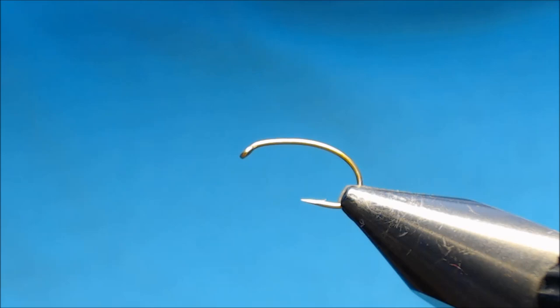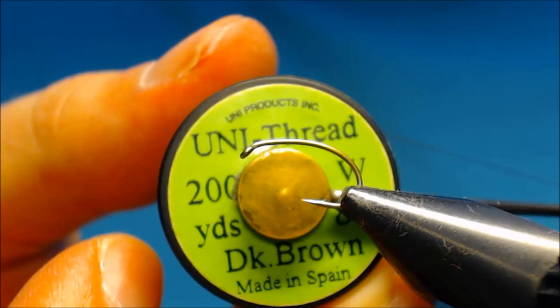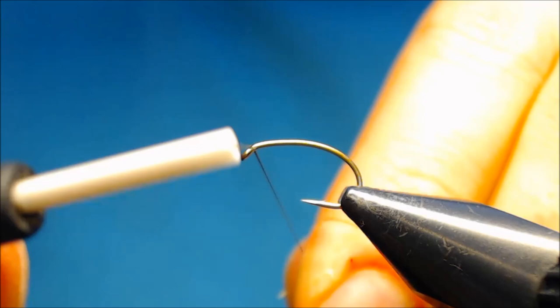Hello everyone and welcome to this fly tying video. Today we're tying a UV Caddis Pupa. The hook I'm using is a Tiemco 2487 and this one is size 12. The thread is the Uni 80 in dark brown.